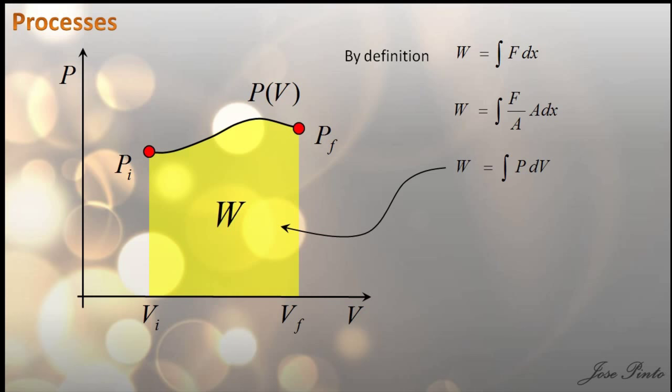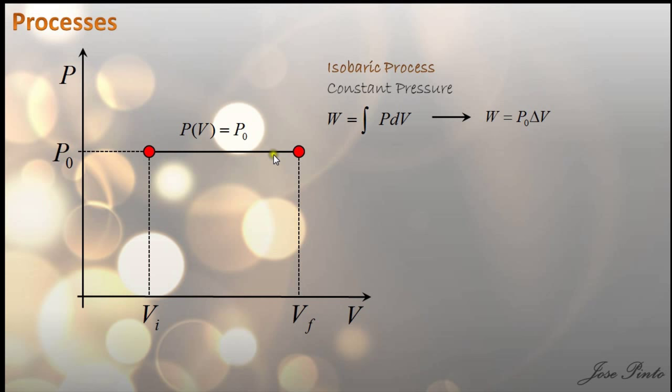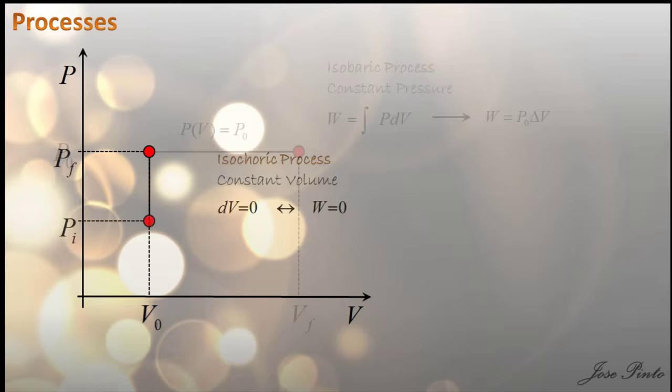An isobaric process is one where the pressure is kept constant. Since it is constant, you can just take it out of the integral, and the work is just the pressure times the change in volume. An isochoric process is one where the volume is kept constant, so if there is no change in volume, then there is no work.